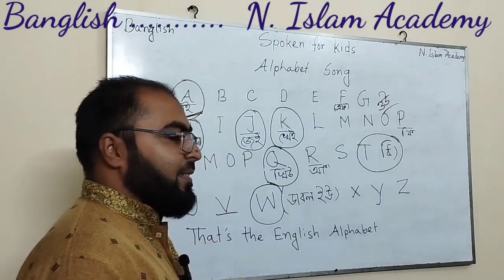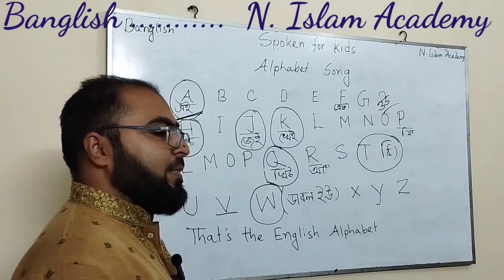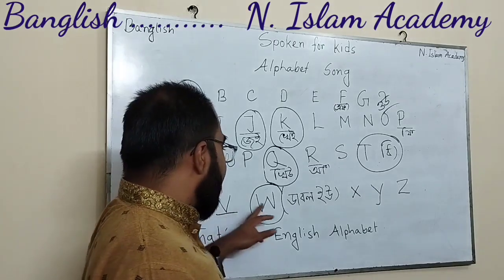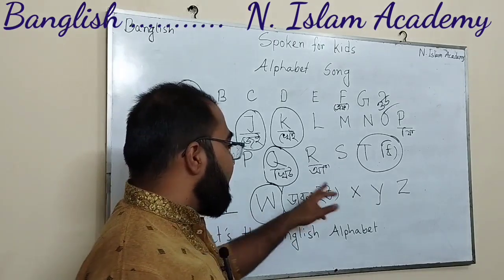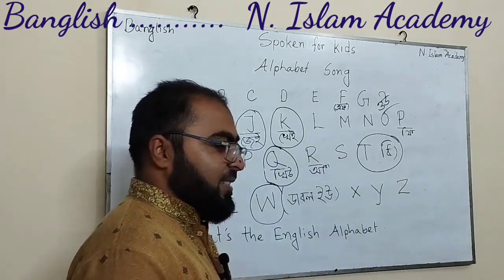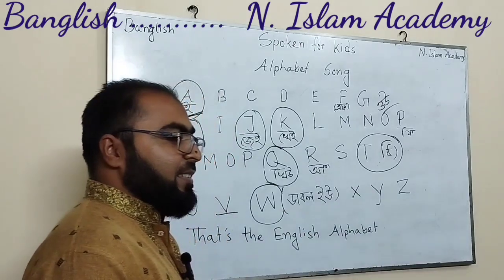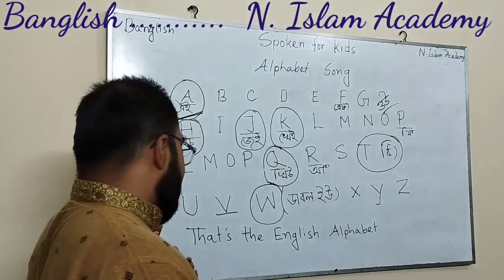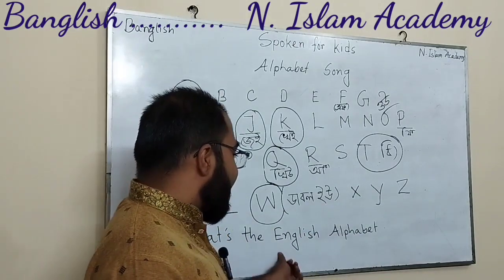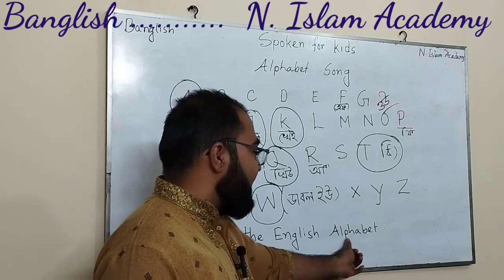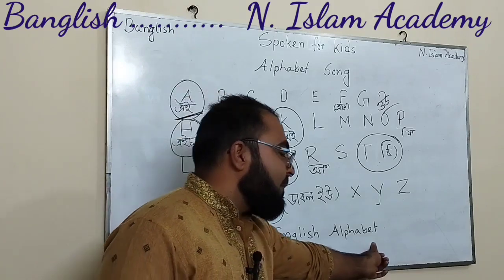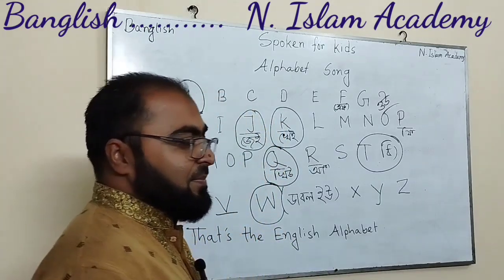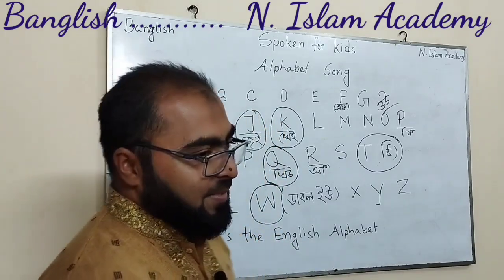U, V, W, X, Y, Z. That's the English alphabet. That's the English alphabet.